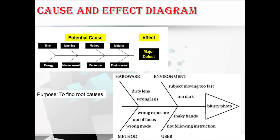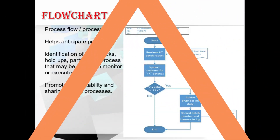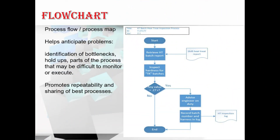Flowcharts show a series of steps that lead to a defect. The advantages include helping anticipate problems, identification of bottlenecks — parts of the process that may be difficult to monitor or execute — and it promotes repeatability and sharing of best processes.